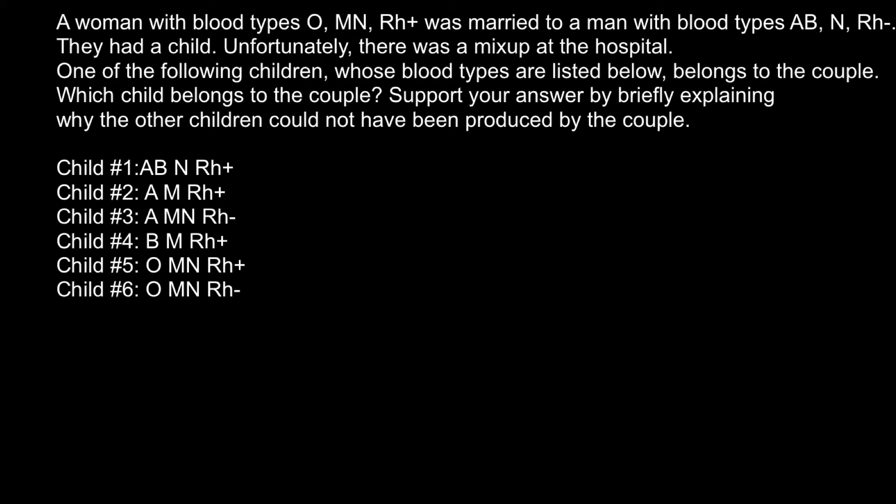Hello and welcome to Nikolai's genetics lessons. Today's problem is: a woman with blood type O, MN, and Rh positive was married to a man with blood type AB, N, and Rh negative. They had a child, but unfortunately there was a mix-up at the hospital. One of the following children, whose blood types are listed below, belongs to the couple.